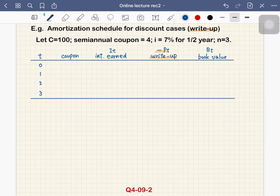OK, so let C equal 100. This is the redemption value and semi-annual coupon is 4. So the time unit is a half year. And suppose i is 7% for half year. Then we have three periods.